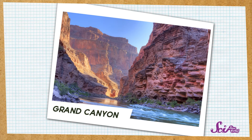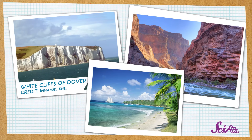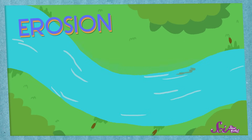Have you ever seen the Grand Canyon in Arizona? Or the White Cliffs of Dover? Or maybe you've been to the beach recently? These landscapes are all beautiful, but how did they form? Well, they formed when the materials that make up the land were moved from one place to another. This movement is called erosion, and you can see erosion in action for yourself right at home.